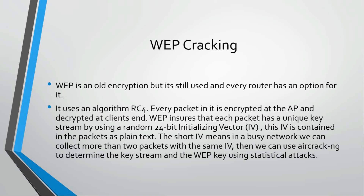Every packet moving into the network is encrypted at the access point, then it flies into the air and goes to the client or device, where it is decrypted. The client can decrypt it because it has the key — once the key is entered, the packet is decrypted and the information can be read. WEP ensures that each packet moving from the access point has a unique key.